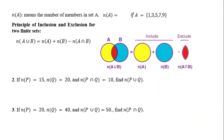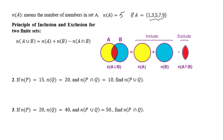Today's video is about the addition rule of probability. n(A) means the number of members in set A. For example, if set A equals {1, 3, 5, 7, 9}, there are five elements in set A, so n(A) equals 5. There is a very important principle of inclusion and exclusion for two finite sets: n(A∪B) equals n(A) plus n(B) minus n(A∩B).